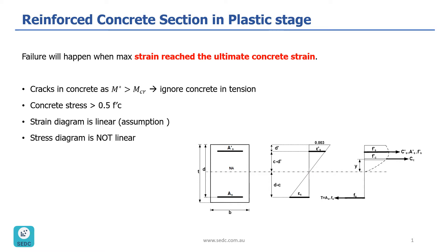So let's look at our section here. This is what you've seen in the previous stages as well. We have a reinforced concrete section with width of b and thickness of t. We have reinforcement in tension, which we call A_s, and then we have A prime s, which is our reinforcement in compression. Here you can see the strain diagram.